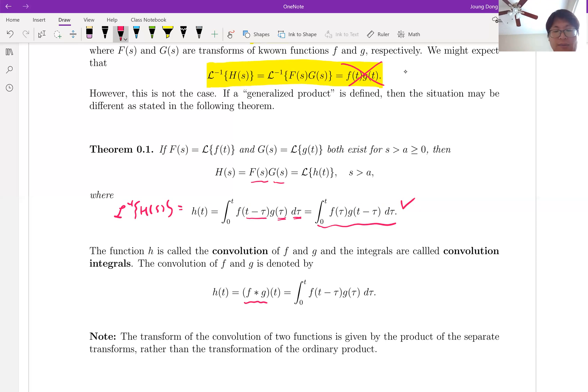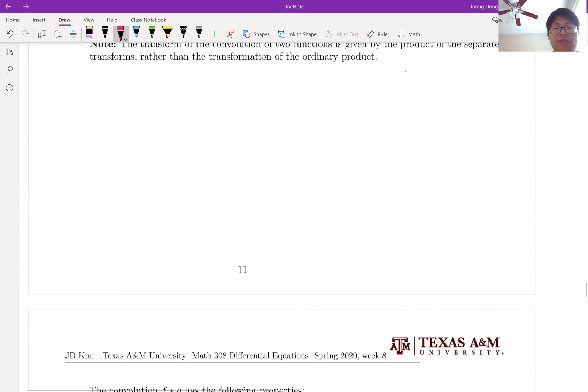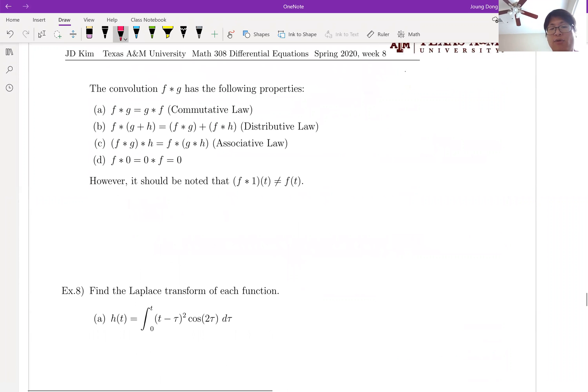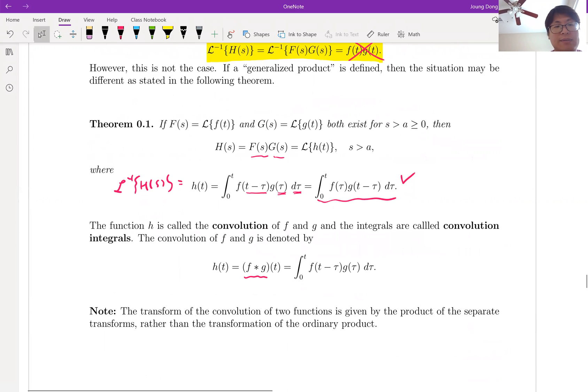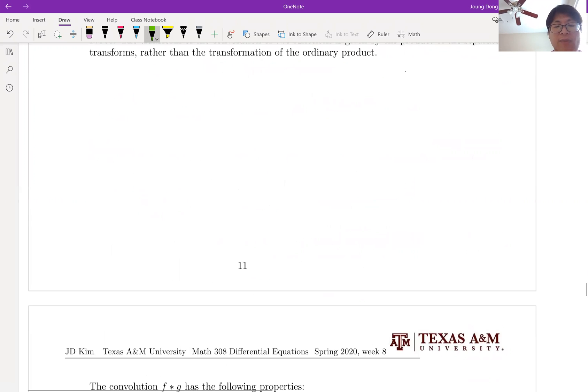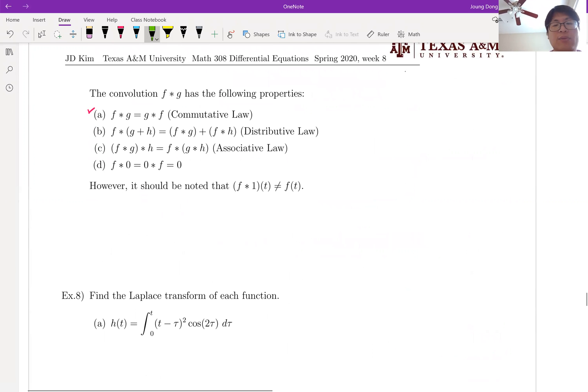So let me talk about the property of convolution integral. First of all, look at that. As I told you, the order, F star G is always equal to G star F. As you just talked about it. I'm talking about this guy, right? It's commutative. We can change them to each other.